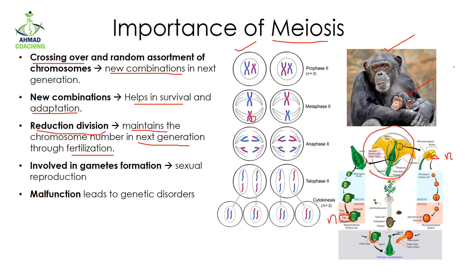Meiosis is involved in gamete formation. Sperm and egg cells are produced with the help of meiosis, and they both have n number of chromosomes. When the n-chromosome egg fuses with the n-chromosome sperm, the next generation has 2n chromosomes restored. This happens because of sexual reproduction.